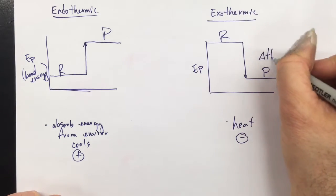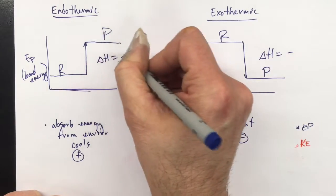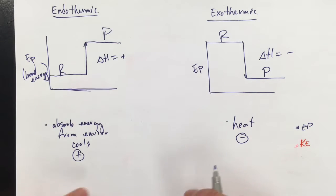And that the enthalpy here is going to be negative, and the enthalpy here is going to be positive, because we have to use this energy from the environment to make more bond energy.